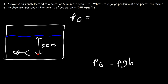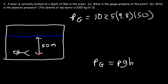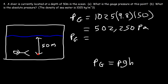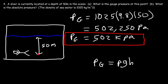The gauge pressure equals the density of seawater, which is 1025 kg/m³, times g (9.8), times the height of 50 meters. So 1025 times 9.8 times 50 gives a gauge pressure of 502,250 pascals. Converting to kilopascals by dividing by 1000, that's approximately 502 kilopascals — the gauge pressure due to the water above the diver.